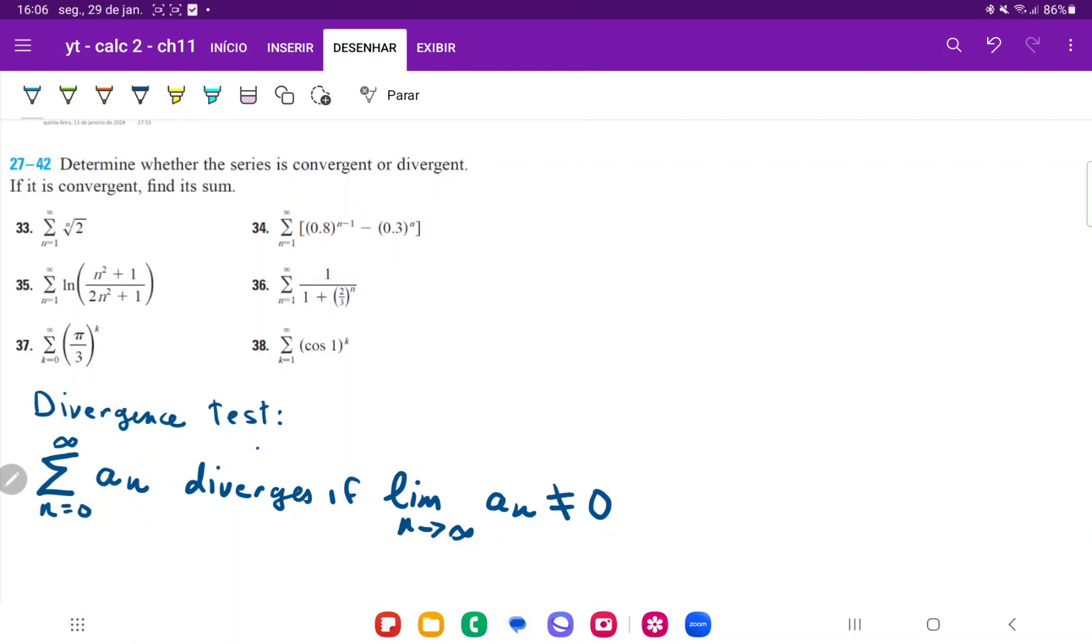The divergence test says that if you take the limit of whatever's inside the summation symbol, so if you take this limit of a sub n, in the case of 36 the limit of this term here as n goes to infinity, if the limit is not equal to zero, that means it diverges.